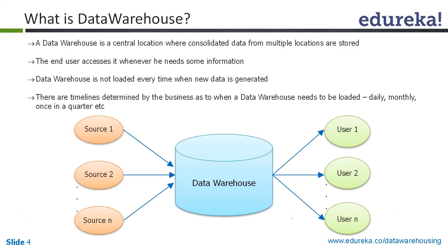Let me give another example to illustrate the different sources — railway reservation. What are the ways you can reserve a railway ticket? You can go through mobile, you can go to the railway station, or you can go to any number of agents spread across the city. These are multiple disparate sources. When you book a ticket on the internet, the format is entirely different from booking via mobile. The data types and the kind of data recorded are changing. These multiple disparate sources make it very difficult for querying and analytical processing.